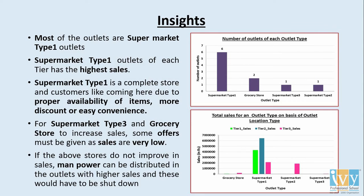Supermarket type 1 outlets have the highest sales, indicating that they have proper availability of items. For supermarket type 3 and grocery stores, attention needs to be given by providing a variety of items, and good advertisements about these stores can be of great help.